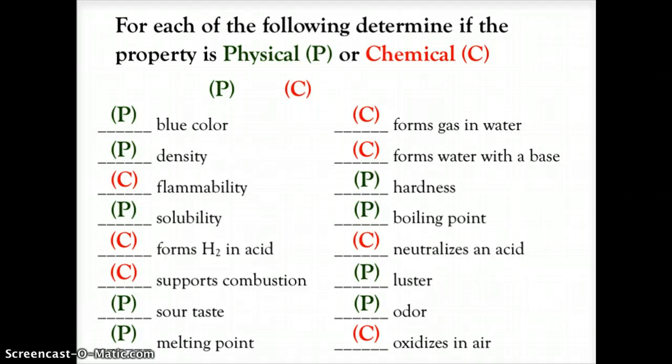Melting point—physical property. Forms gas and water, that's a chemical change taking place, so that's a chemical property. Forms water with a base—that again is a chemical change taking place, so therefore chemical property. Hardness and boiling point are both physical properties. If it neutralizes an acid, that's an action taking place, a chemical action, so that's a chemical property.